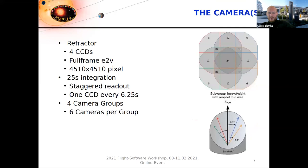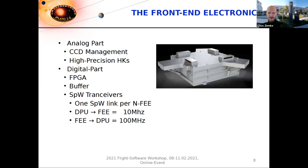We don't only have one camera — we actually have four camera groups of six cameras each, so 24 cameras in total. All four groups are pointing in slightly different directions. This is done in order to increase the signal-to-noise ratio of target stars that are observed by multiple cameras at the same time. In order to read out a CCD, you need front-end electronics comprised of two parts: an analog part and a digital part.